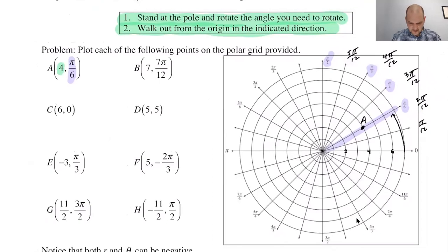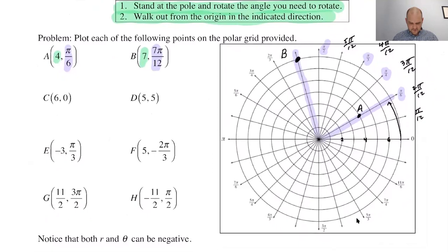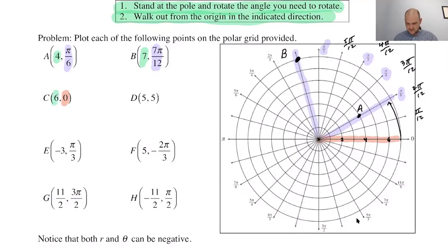For point B, we rotate to 7 pi over 12 — that's past 5 pi over 12 and 6 pi over 12, so it's here — then go out 7 units. For point C, the angle is 0 and R is 6: you face 0, which is the positive x direction, and walk out 6 units, landing right there.